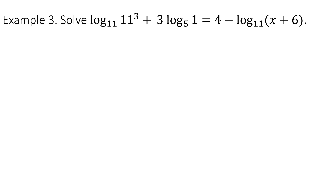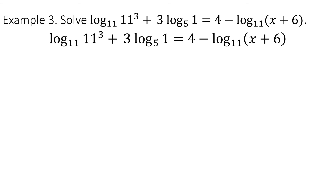Just like in Example 2, we first check the bases of the logarithms. If they are all equal, we may use the laws of logarithms. For two of the logarithms we may use the laws, but for another part we will not be able to combine them using the laws of logarithms. So we use some other properties. We have a property which tells us that if the base and the argument are equal, the value of the logarithm is the exponent — so that equals 3.